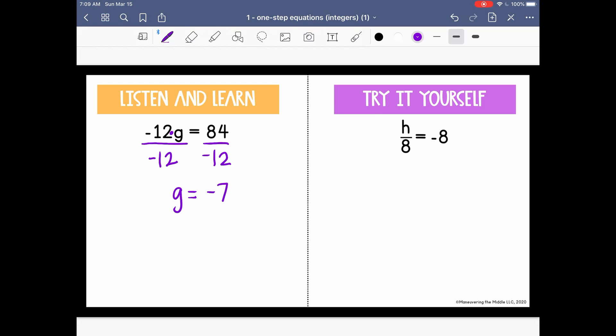Now this one was a little bit different. It says h divided by 8 equals -8. And remember, even though it looks like a fraction, a fraction is another way to represent division. So the inverse of division is multiplication, so I'm going to multiply by 8. I'm going to do that on both sides of my equation to keep it balanced, and I'll get h equals -64.